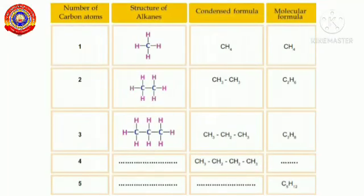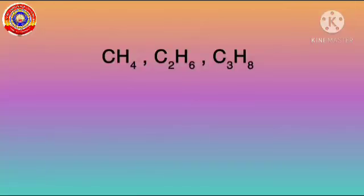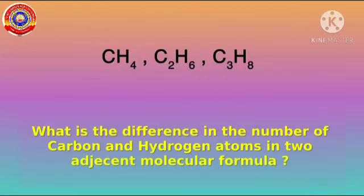Here is a worksheet for you. The structure of alkanes, their condensed formula, and molecular formula are given — complete the table and write it down in your notebook. Observe the given molecular formulae: CH₄, C₂H₆, and C₃H₈. What is the difference in the number of carbon and hydrogen atoms in two adjacent molecular formulae?